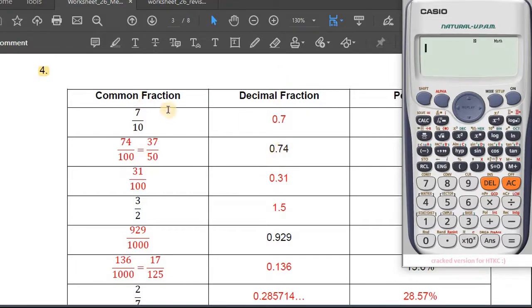Now if we're at a decimal fraction and you need to go to a common fraction, 0.74 is equal to... in my previous video I mentioned you can write, you've got two zeros, so you're gonna put 74 over 100, and you'll get the same answer.